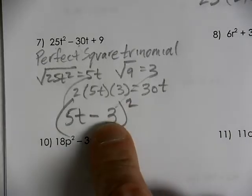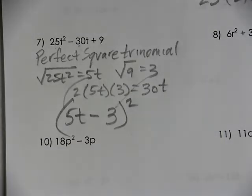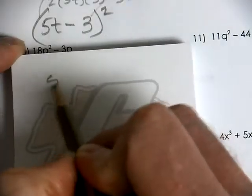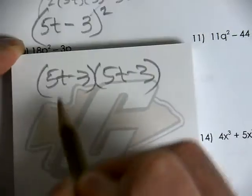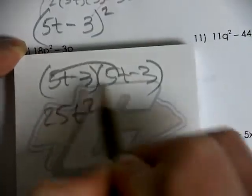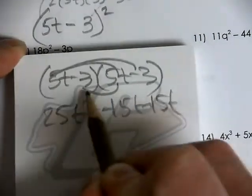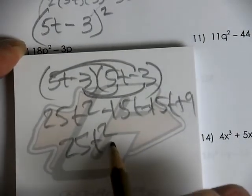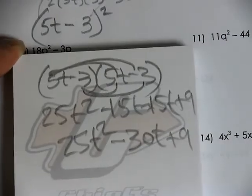You're not allowed to distribute that 2 through — you have to write out the binomials twice because you have it squared. To check: (5t minus 3)(5t minus 3) gives negative 15t and negative 15t and positive 9. Together that makes 25t squared, negative 30t, and positive 9 — and that's what we started with.